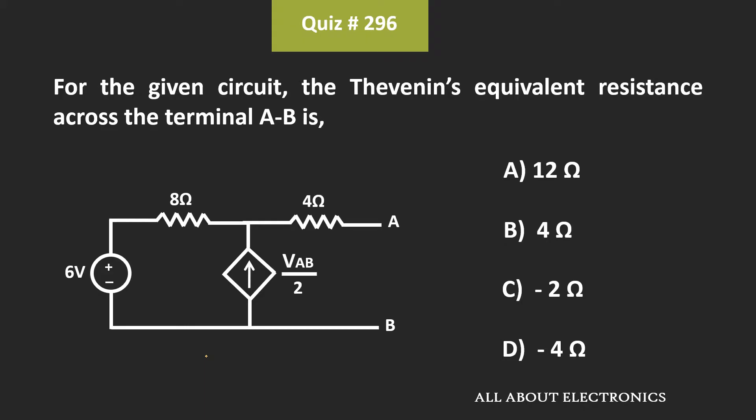Hey friends, welcome to the YouTube channel ALL ABOUT ELECTRONICS. In this question, we have been given a circuit and we have been asked to find the Thevenin's equivalent resistance across terminals A and B.